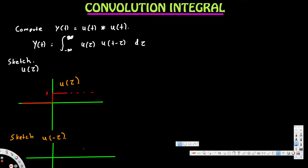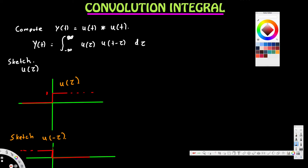u(negative τ) should be 0 until 0, and after that it turns on and extends — it is just the reverse of u(τ). Now u(t minus τ) means the u(negative τ) graph shifted by t units.